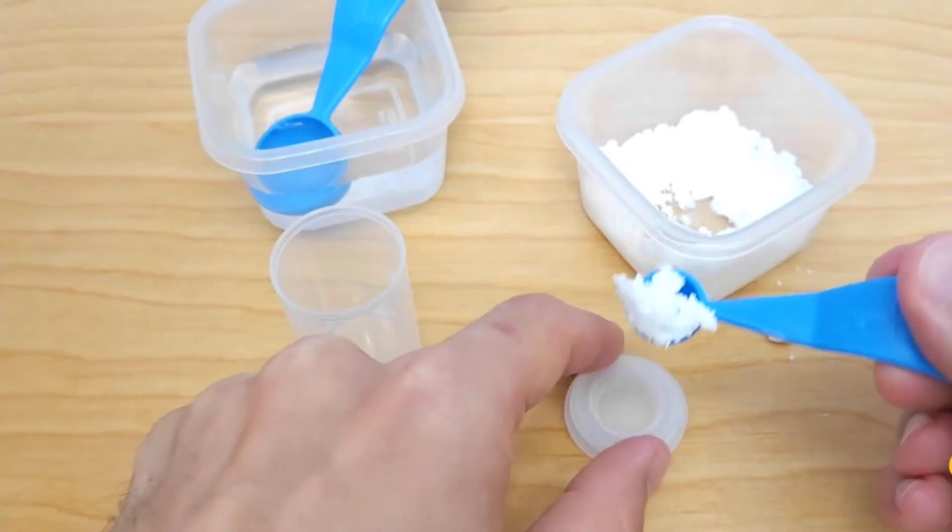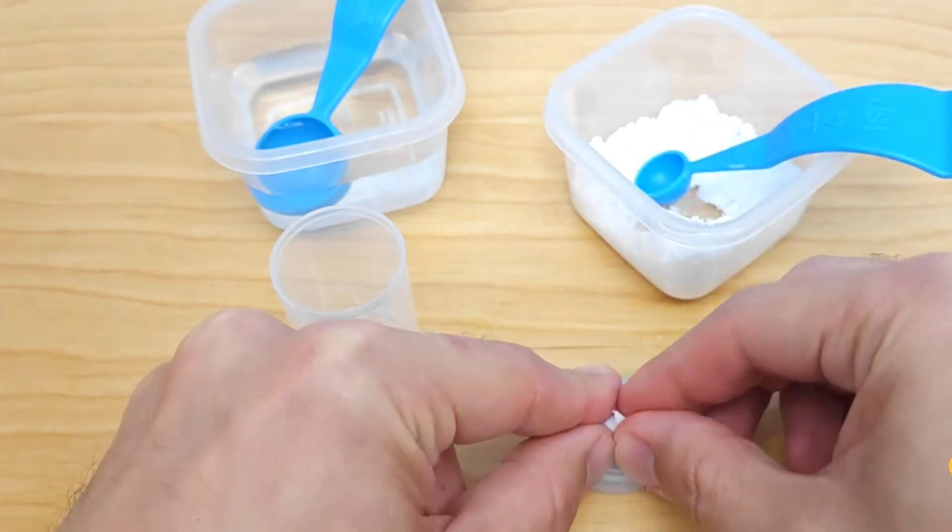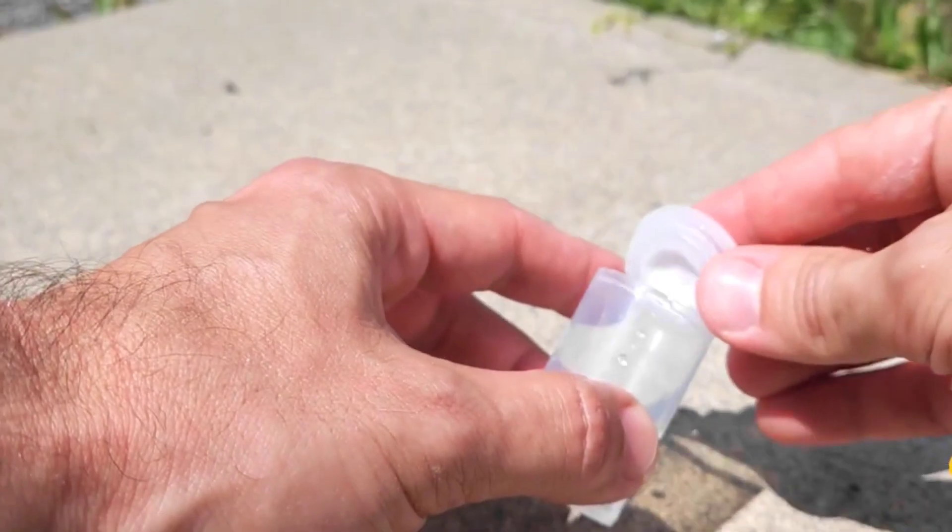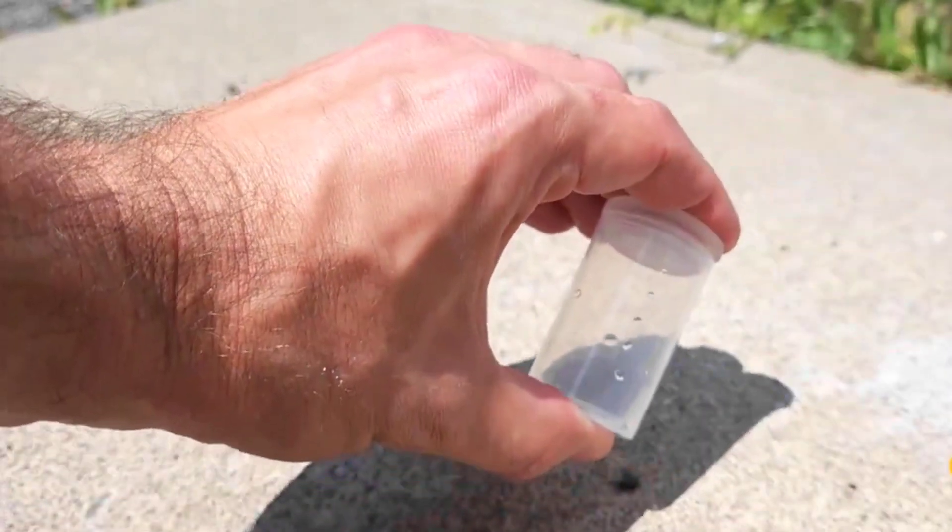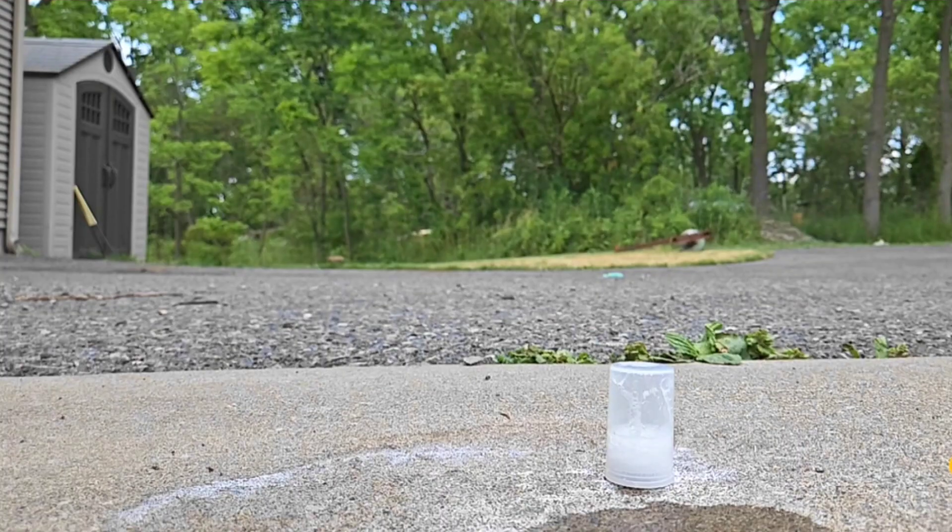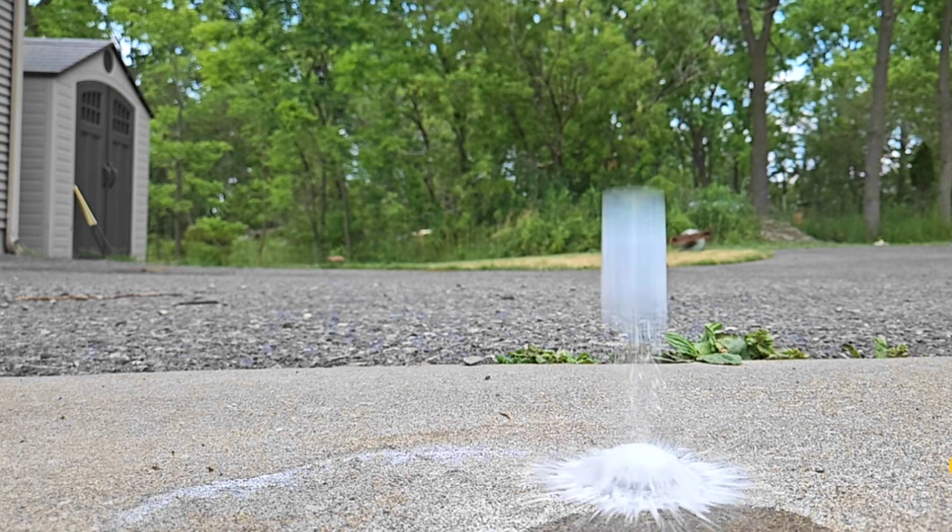Begin by placing a small amount of baking soda into the film canister. Next, pour vinegar into the canister, quickly close the lid, and turn it upside down, placing it on the ground. Step back and watch as the chemical reaction between the baking soda and vinegar produces a buildup of carbon dioxide gas inside the canister.